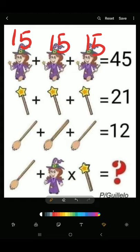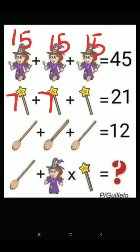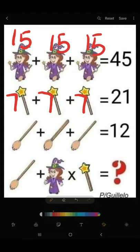And then you have your wands. Your wands are 7 plus 7 plus 7, which equals 21.